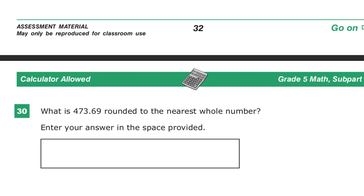The question says, what is 473 and 69 hundredths rounded to the nearest whole number? Enter your answer in the space provided.